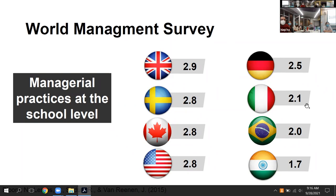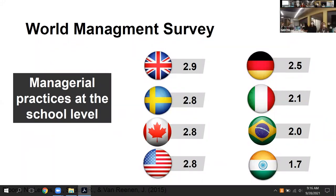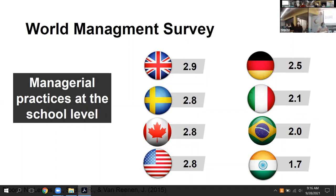A question was asked about whether those were all public schools or a mixture. The answer was a mixture, including different setups in terms of education levels offered. The speaker then explained why Brazil is an interesting case study: it is a huge federalist country with 27 states — counting the federal district — and more than 5,000 municipalities.